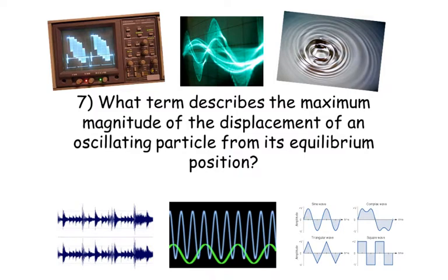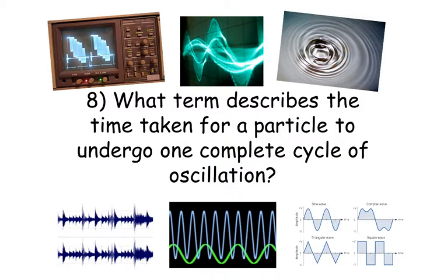Number 7. What term describes the maximum magnitude of the displacement of an oscillating particle from its equilibrium position? Number 8. What term describes the time taken for a particle to undergo one complete cycle of oscillation?